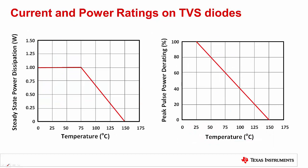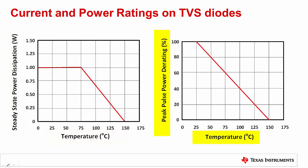The last rating covered in this video for TVS diodes is the steady state power dissipation, which is the maximum power that the device can continuously dissipate. This is important as some faults may happen for an extended period of time as opposed to a short millisecond pulse. For example, many of the devices in this presentation are calculated using a 40 volt continuous fault. The curves shown here illustrate how steady state power dissipation is rated versus temperature, and a similar derating curve is provided for the peak pulse current.